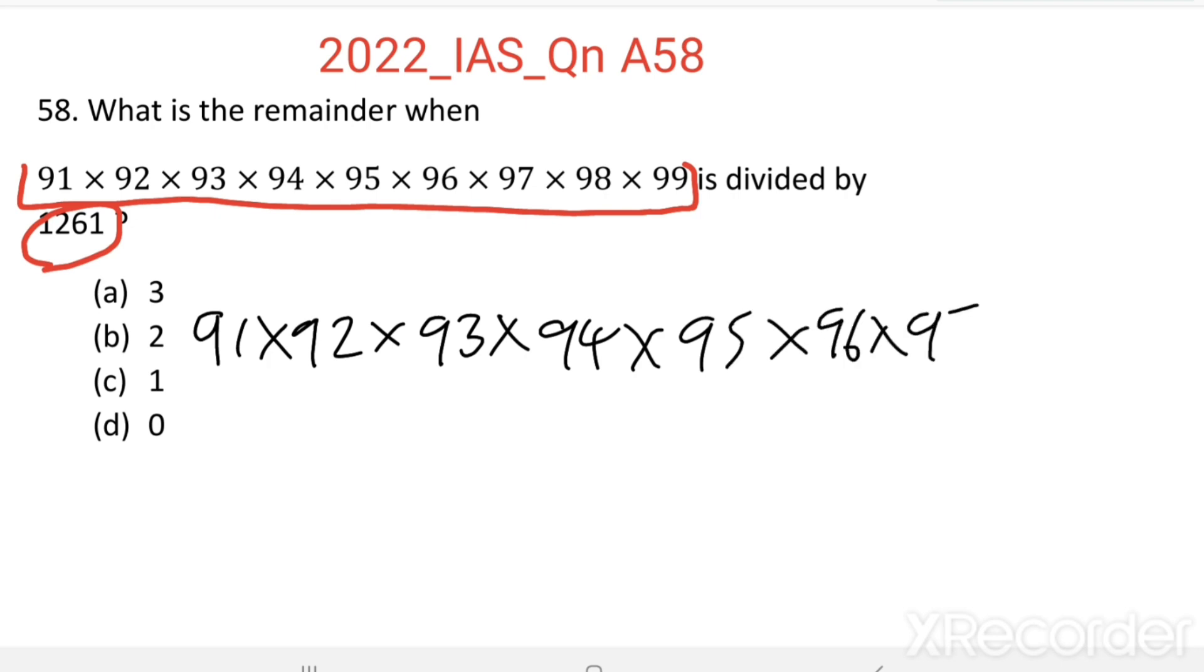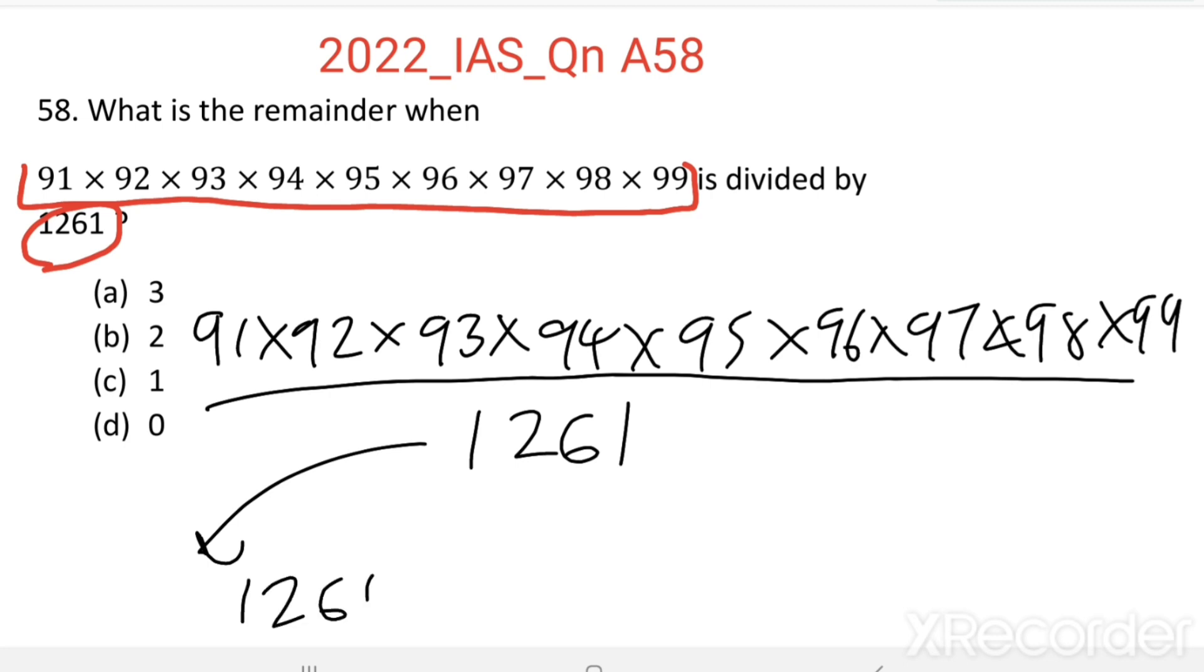This 1261 we can write as 1261 = 13×97. These two are the only factors of 1261 other than one and itself.